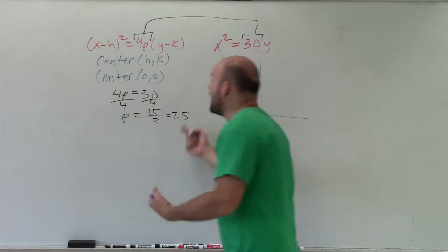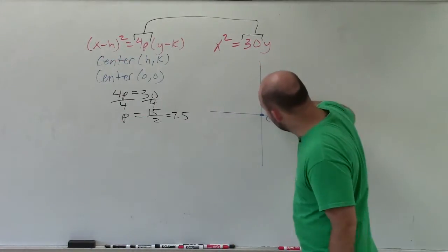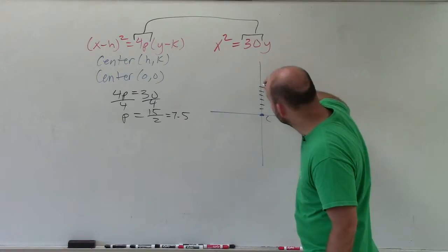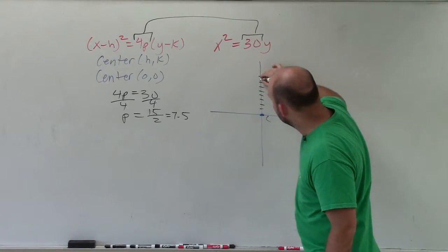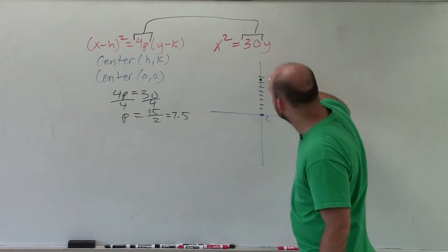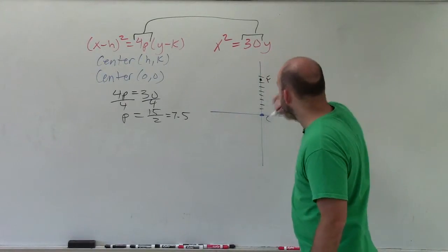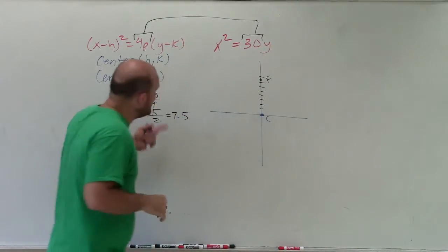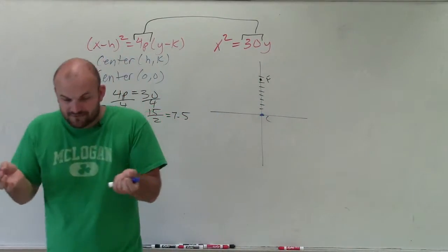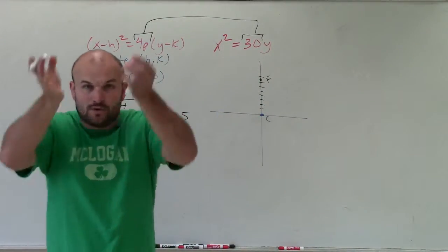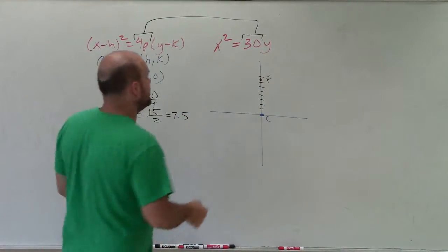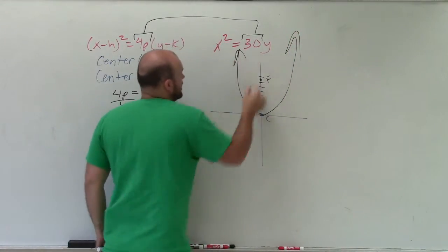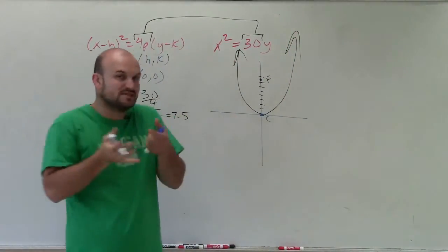That means the focus is positive 7.5 up from the center — 1, 2, 3, 4, 5, 6, 7 — and we mark the focus. Since p was positive, we go up, and since the focus is going up, the parabola has to open up, because it always opens toward the focus.